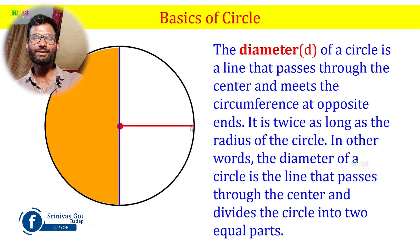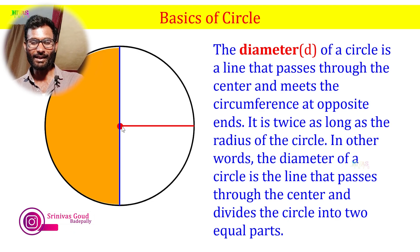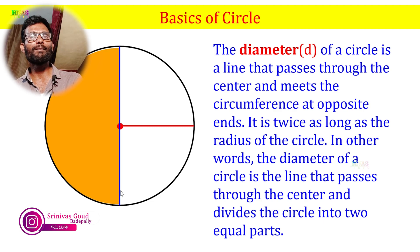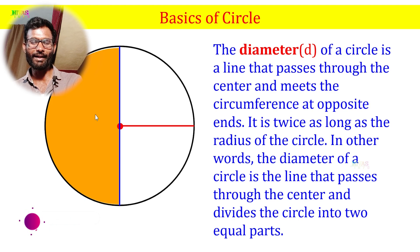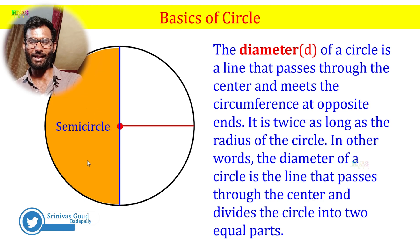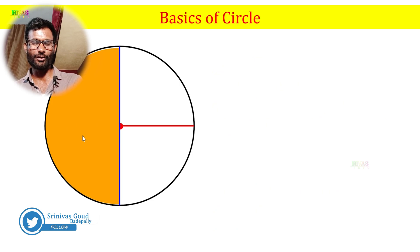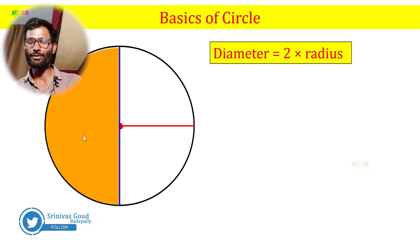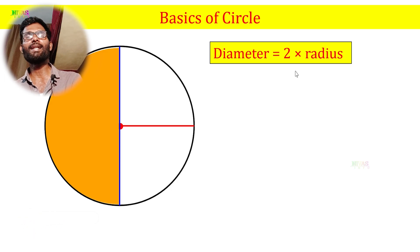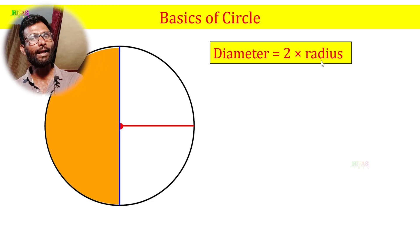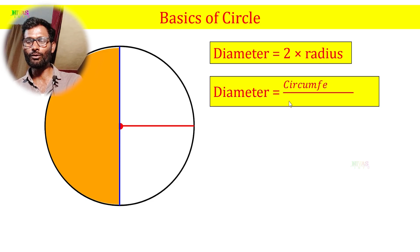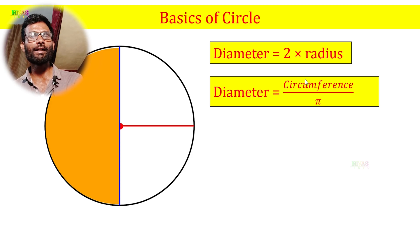If we look at the radius — the distance from center to circumference — we can double this radius to find the diameter. If we divide the circle into two equal parts, this half-circle is a semi-circle. The formula is: diameter equals 2 into radius. Also, diameter equals circumference divided by pi.